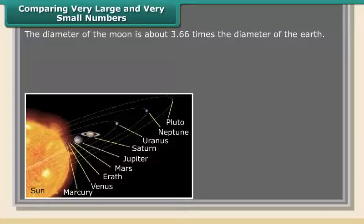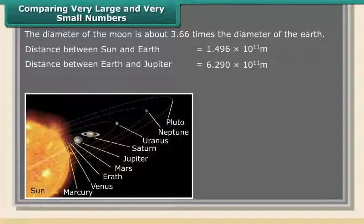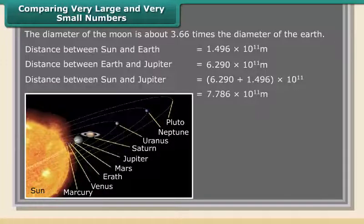The diameter of the Earth is about 3.66 times the diameter of the Moon. Distance between Sun and Earth is 1.496 × 10¹¹ meters. Distance between Earth and Jupiter is 6.290 × 10¹¹ meters. Therefore, distance between Sun and Jupiter is equal to 6.290 + 1.496 × 10¹¹ meters, which equals 7.786 × 10¹¹ meters.